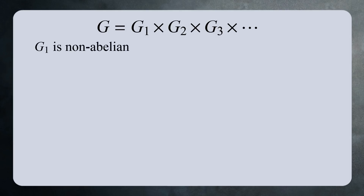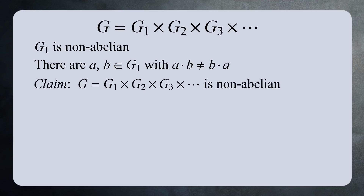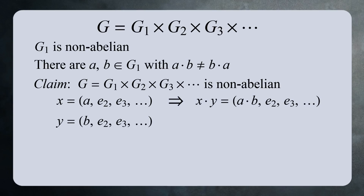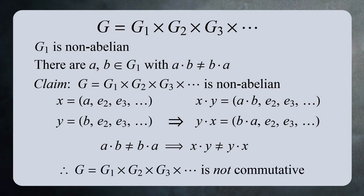Here's why. Suppose we have a direct product, and G1 is non-abelian. This means there are elements A, B in G1 where A·B ≠ B·A. Now look at the elements X = (A, E2, E3, ...) and Y = (B, E2, E3, ...), where the other components are identity elements in their corresponding groups. Then X·Y = (AB, E2, E3, ...) and Y·X = (BA, E2, E3, ...). Since AB ≠ BA, these two values are different, so the direct product is not commutative.